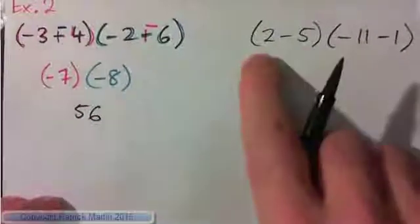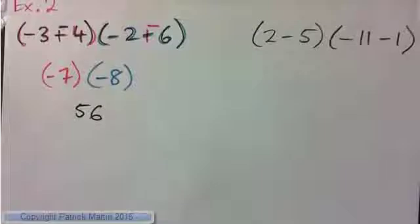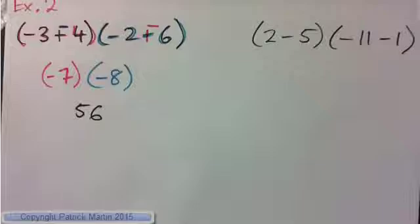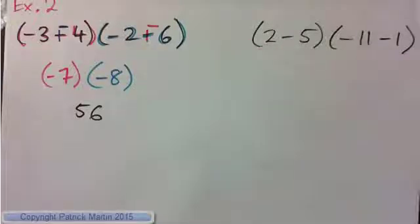Now write this one down and do it yourself: two minus five, times negative eleven minus one. Press pause, write it down, do it yourself, and then I'll do it.